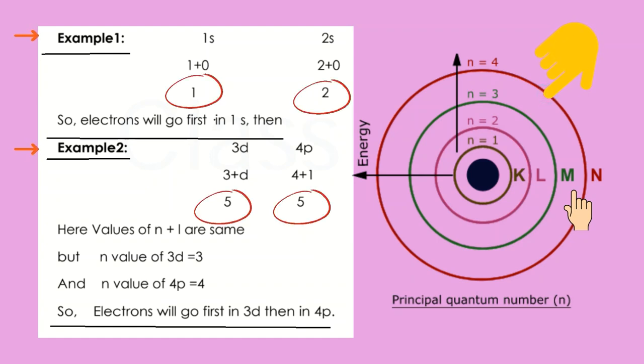For 2s, n plus l value, n equals 2, l value for s equals 0. Therefore 2 plus 0 equals 2. Value of n plus l for 2s is 2. So electrons go first in 1s then in 2s.